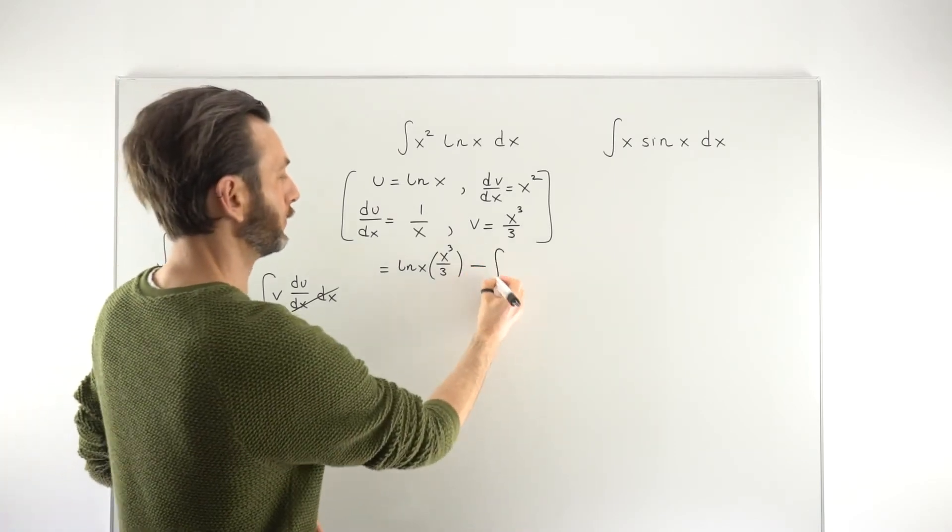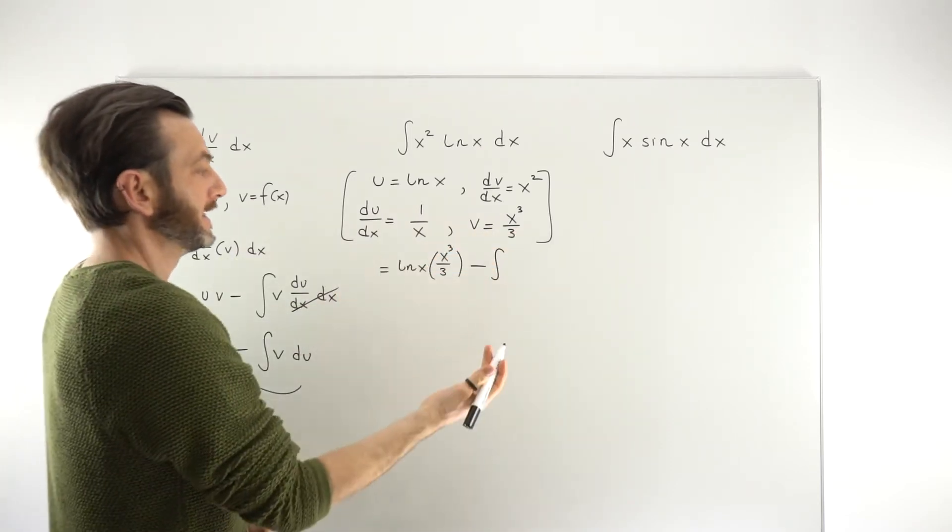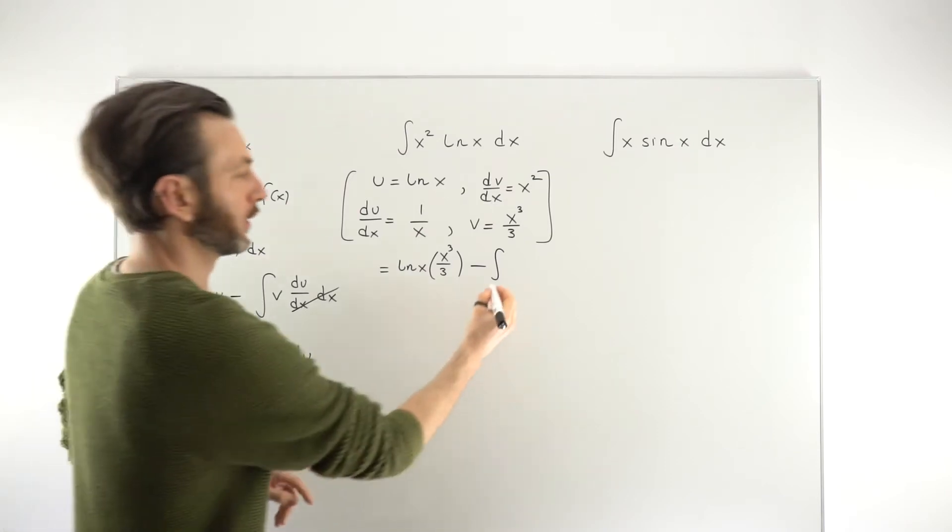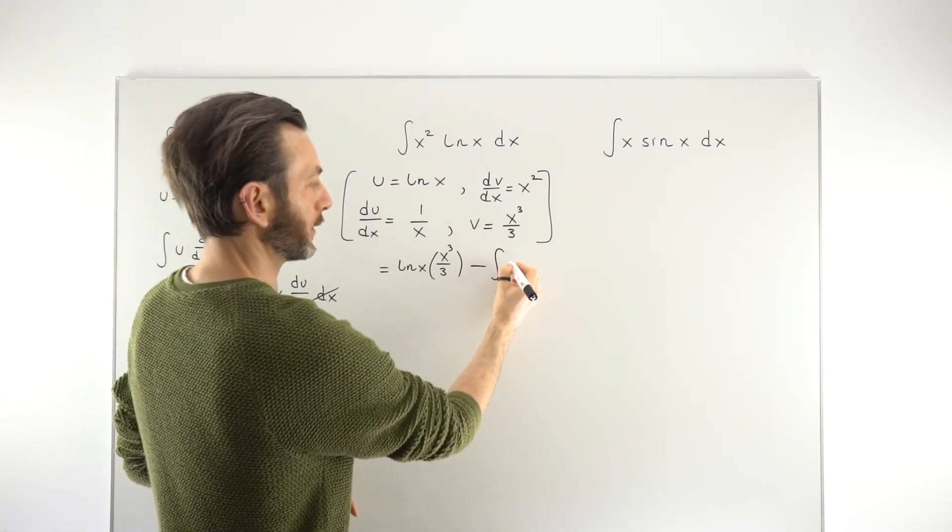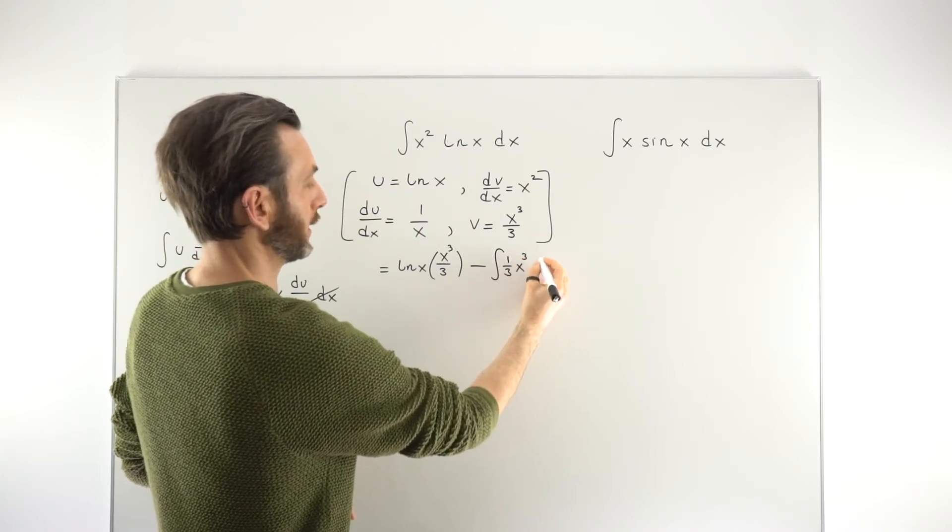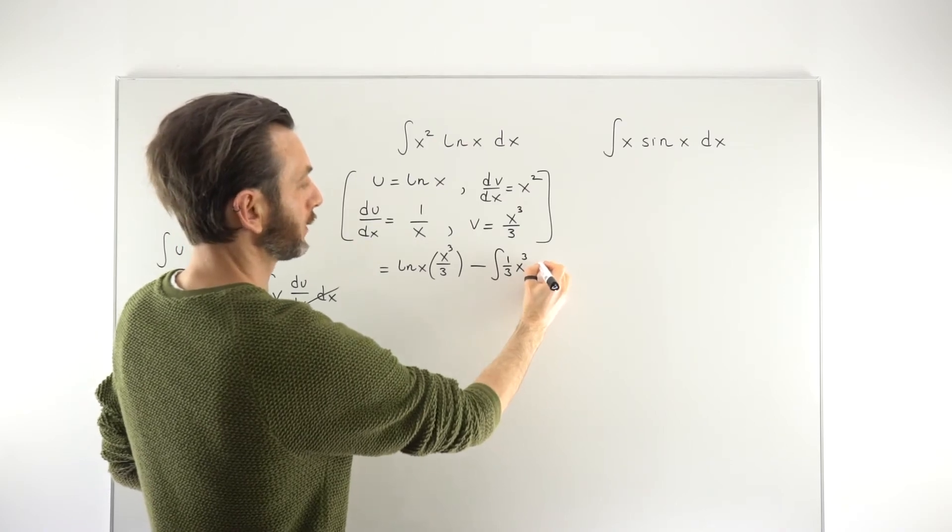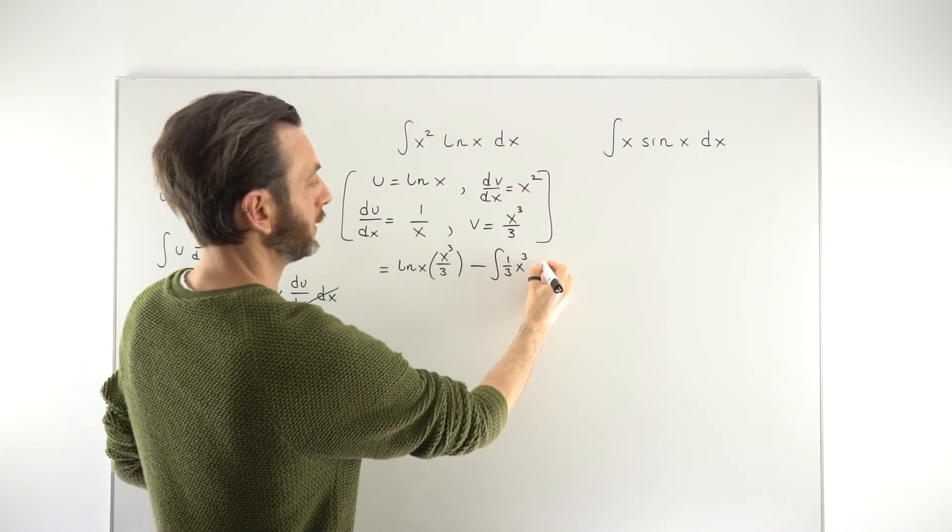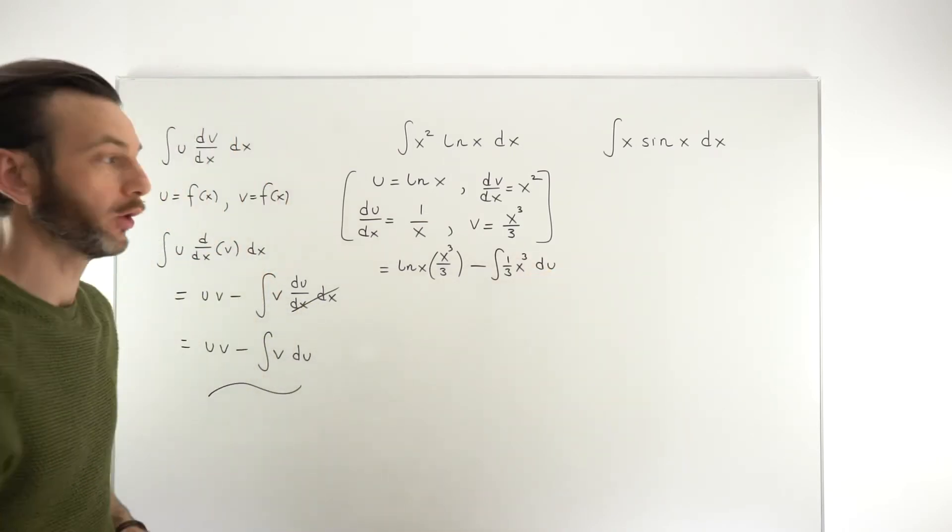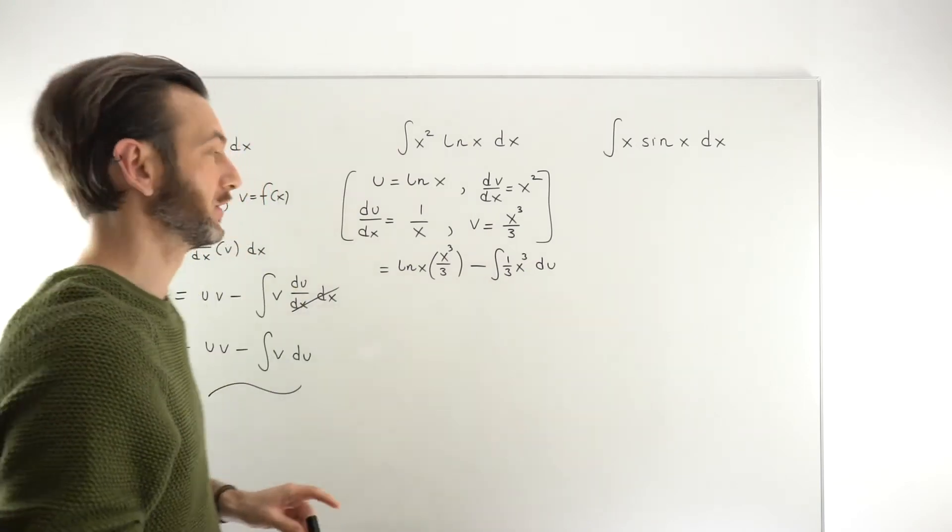So the integral of v, the function v, which is this guy here, du. So we're going to need to think about our du in a moment. So it's going to be v, which is x cubed over 3. I'm going to actually write that as 1 third x cubed. And we want to integrate that guy du. So that's going to look a little weird, right, to have a sort of du here. I'll just put it in for this line of working because the variable here is x, but here we've got a du. It's telling us to integrate with respect to u.